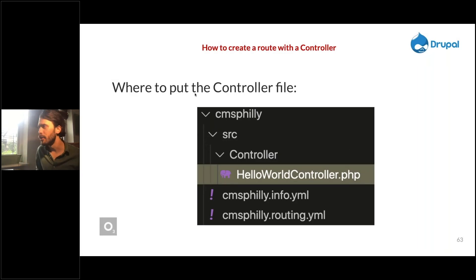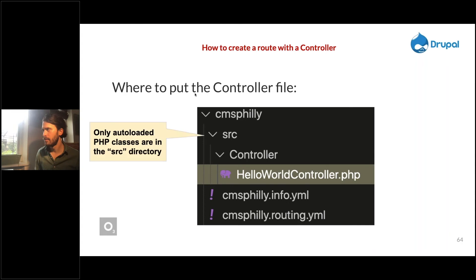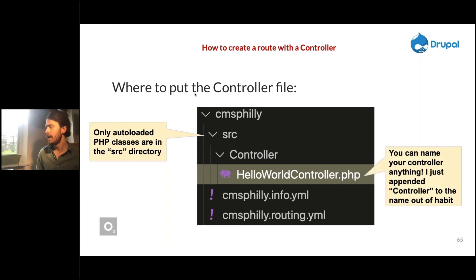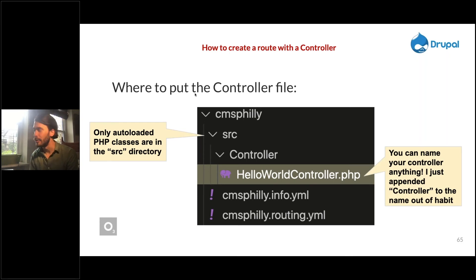Drupal's controller setup is similar to Craft — you put your controller within the Controller subdirectory within src. Only autoloaded PHP classes are in the src directory; if you want your class to be available to any other PHP in the entire system, put it in src. Unlike Craft, you can name your controller anything — I appended the word 'Controller' to HelloWorld out of habit.